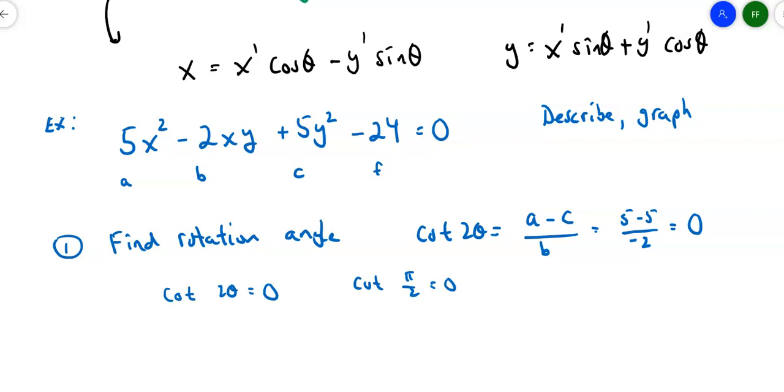First thing I'm going to do is find the rotation angle. My formula is cotan(2θ) = (a-c)/b. So I end up with (5-5)/(-2) = 0. If the cotan of 2θ equals 0, then 2θ = π/2, so θ must be π/4. So π/4 is my angle of rotation.